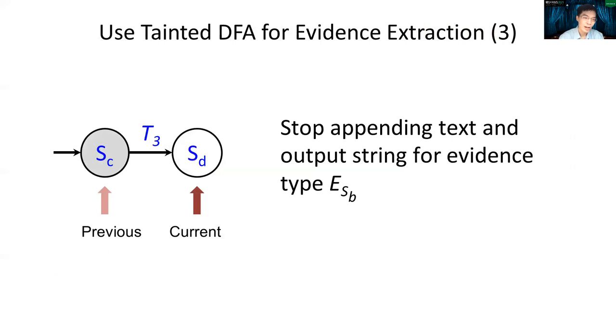This scenario suggests that, as you can see, the first one is the tainted one and the next one is the one without the taint, which means the first one has the evidence type state, but then the following one doesn't. So in this case, it suggests that the input character T3 should not be counted as the evidence string, and we should stop the buffering and output the result.